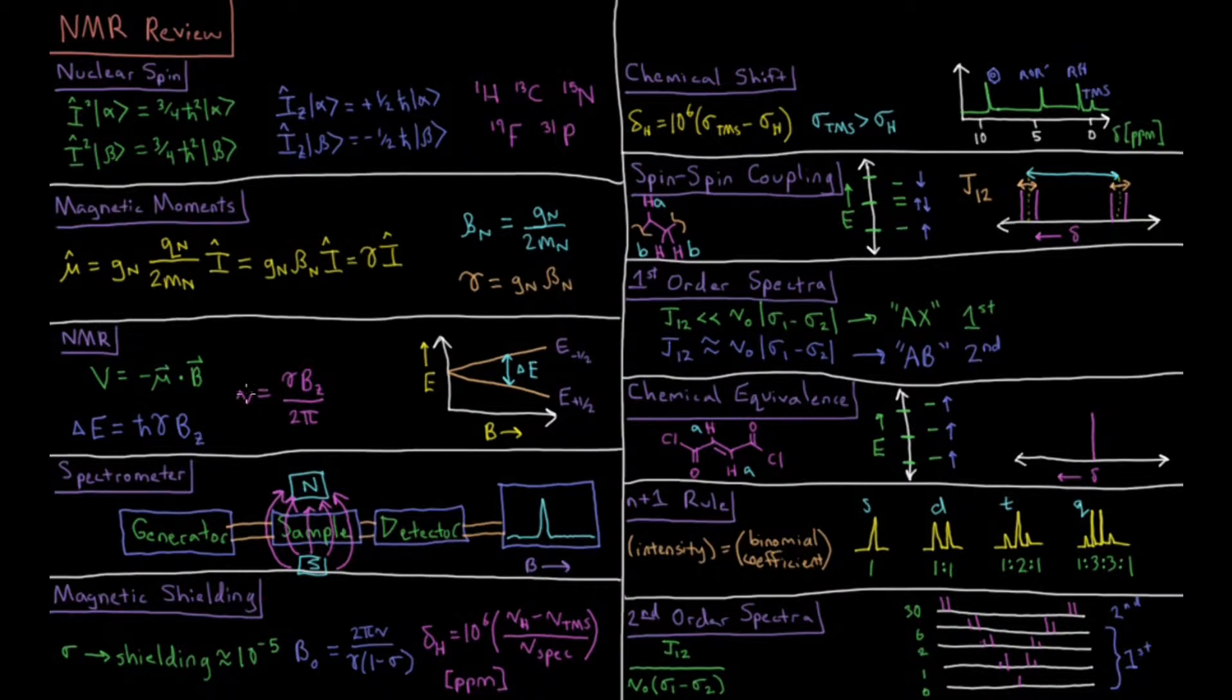The frequency of that is gamma times the Z component over 2 pi. So as the magnetic field gets stronger and stronger, the energy levels between our spin-alpha and spin-beta up and down nuclei gets greater and greater, and the frequency of that energy transition gets larger and larger.